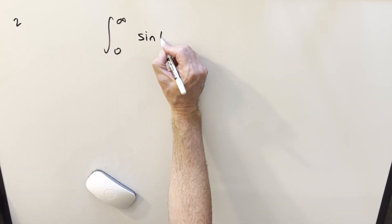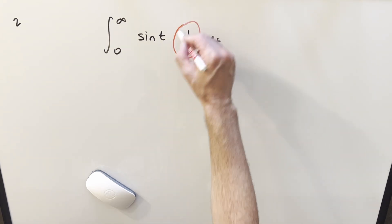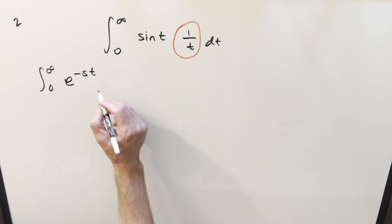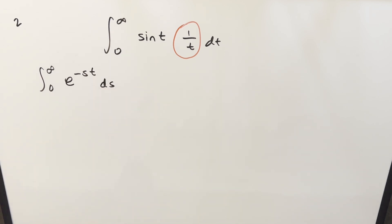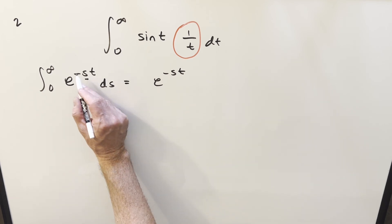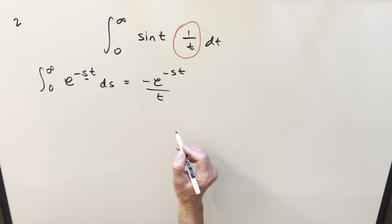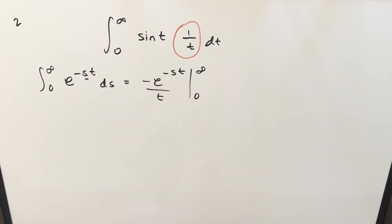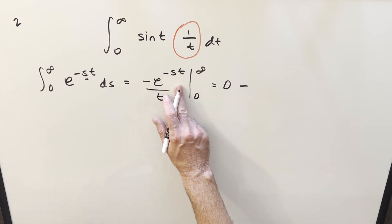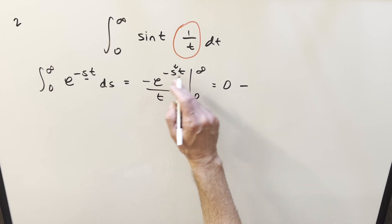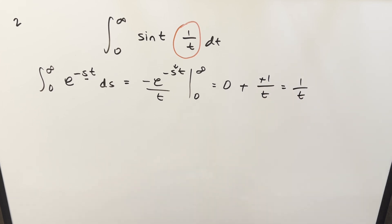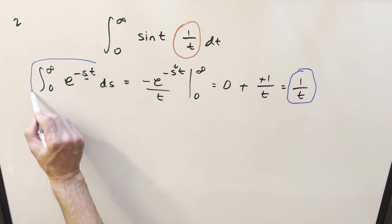We're going to write this as sine t times 1 over t, and I want to focus on this 1/t part. I'm going to create another integral that seems to have nothing to do with what we're doing, and integrate e^(−st) with respect to s from 0 to infinity. When we integrate e^(−st) with respect to s, the minus t pops out, giving minus 1 over t times e^(−st), evaluated from 0 to infinity. Plugging in infinity gives 0 (the exponential dominates), and plugging in 0 gives e^0 = 1, so minus times minus is plus, and we get exactly 1 over t. So we've found a way to express 1/t as that integral.